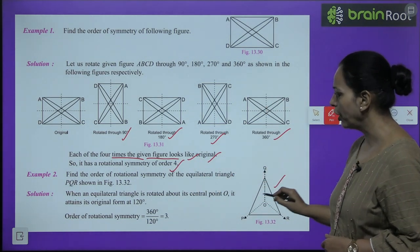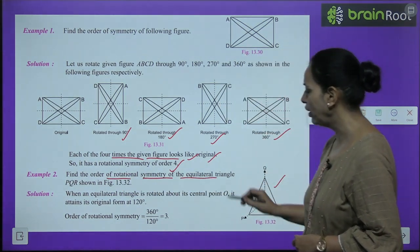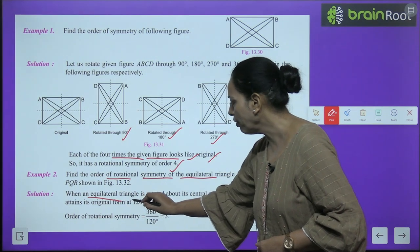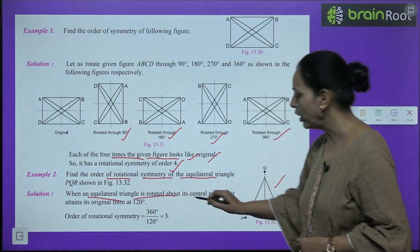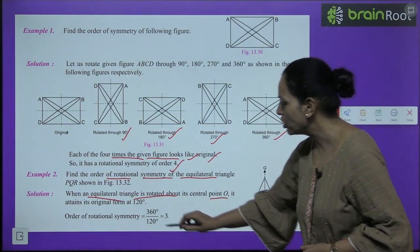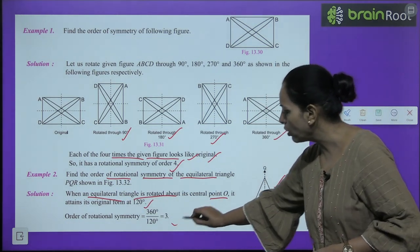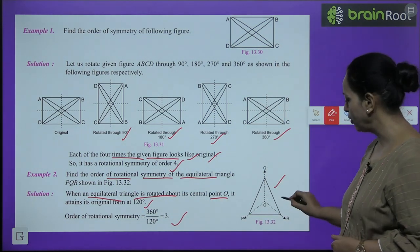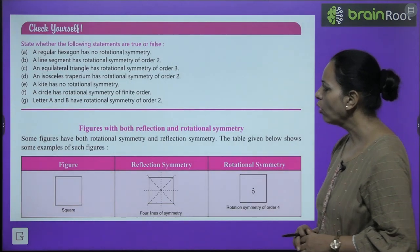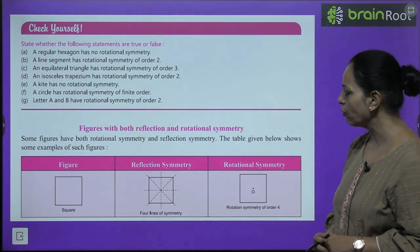Example 2: Find the order of rotational symmetry of equilateral triangle PQR. When an equilateral triangle is rotated about its centre, it attains its original form at 120°, so the order is 360 ÷ 120 = 3. Now check yourself — some questions are given for you to try.